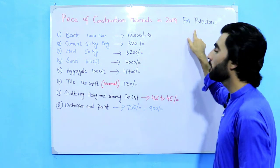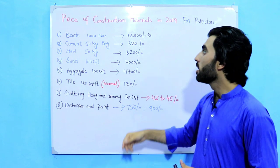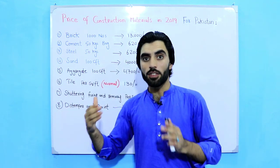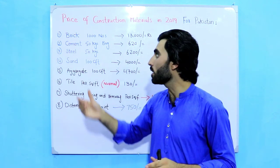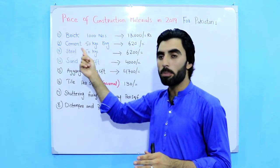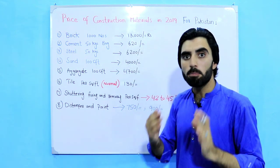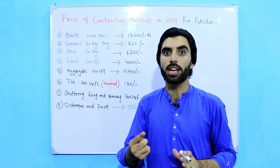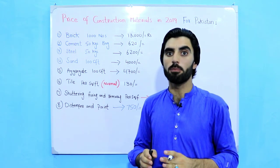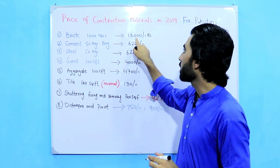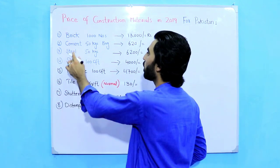This video covers prices of construction materials in 2019 for Pakistan, and the next video will be especially for India. The main key material of construction and building is brick. One thousand numbers of bricks price in Pakistan is 13,000 rupees, meaning the price of one brick is 13 rupees.